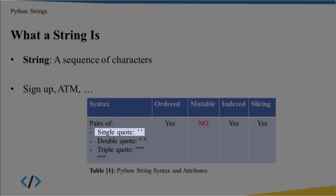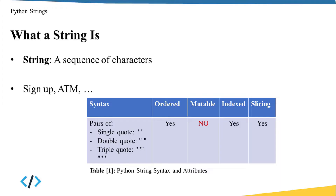To create a string you have to use pairs of single quotes, double quotes, or triple quotes. String is an ordered data structure — each character has its own known and fixed location. String is not mutable; once you create it you cannot update it. String is an indexed collection, so you can use positive or negative integer indexes to access each element. String also supports slicing, so you can extract a substring from your string.